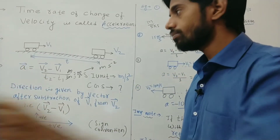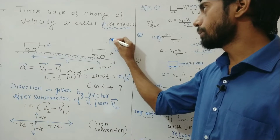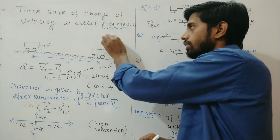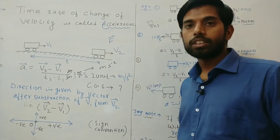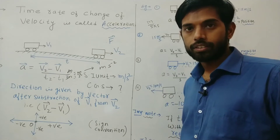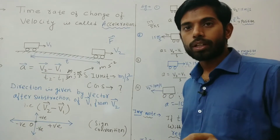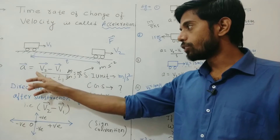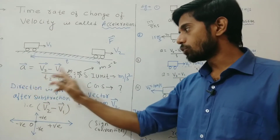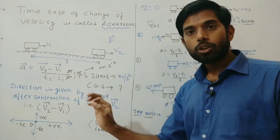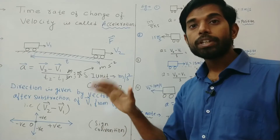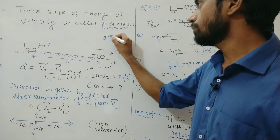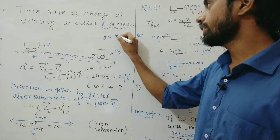Acceleration is a vector quantity — that's why I put an arrow sign here. Any vector quantity is represented with a vector sign. So acceleration equals (v2 − v1) / (t2 − t1). The SI unit of acceleration is meter per second square, because acceleration is change in velocity divided by time.